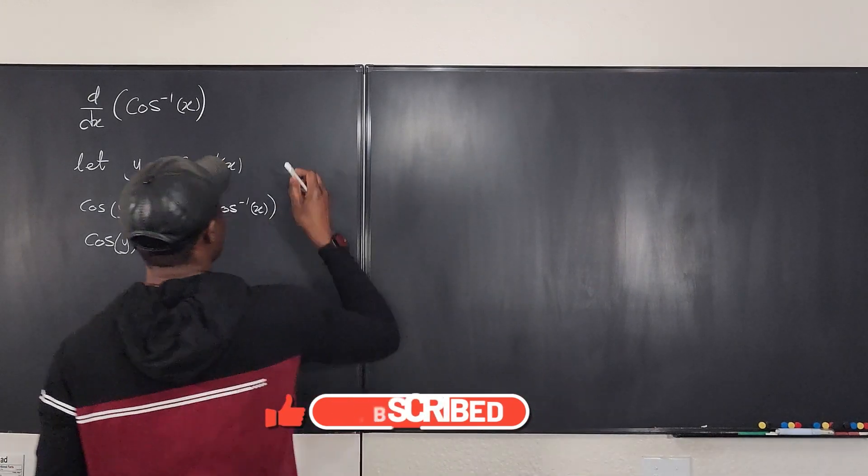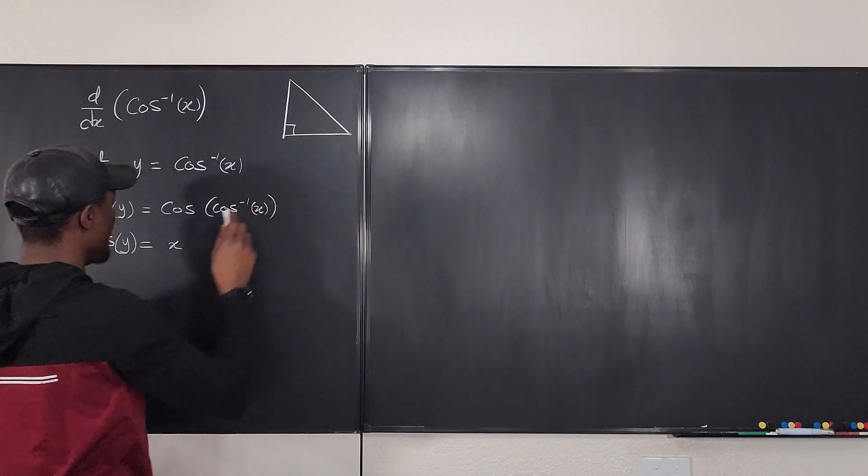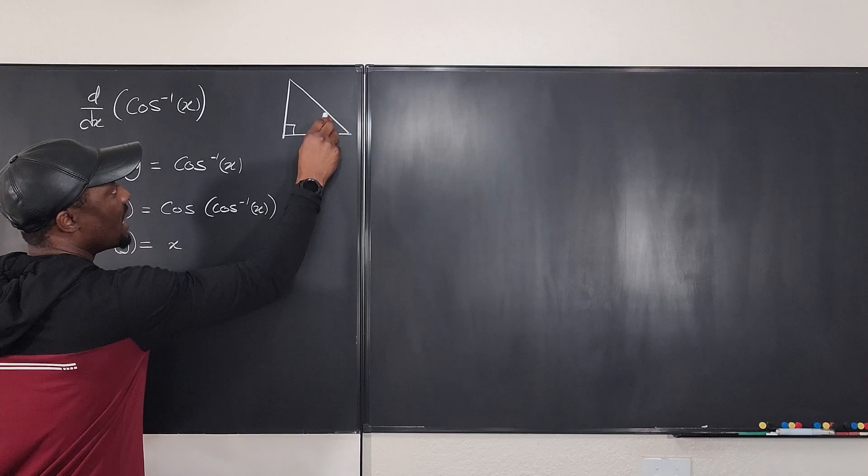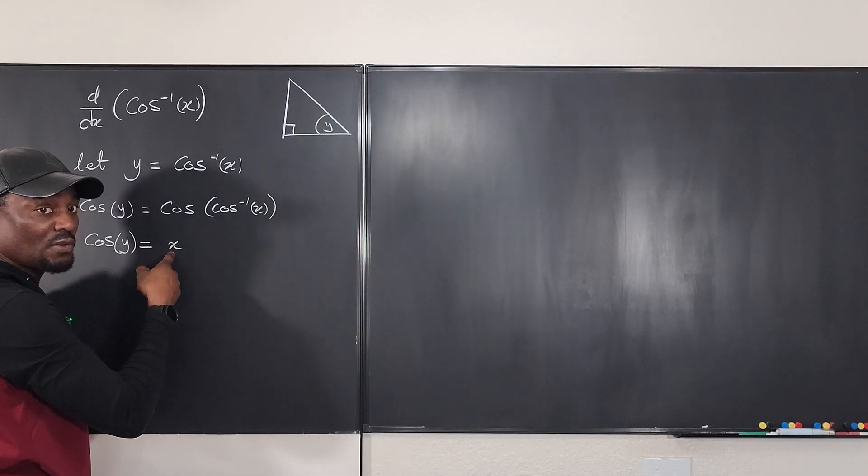So you're going to go here and say, I have a triangle, a right triangle, the angle is y. And I know the cosine of this angle is x. Well, by the way, this is x over one. So cosine is adjacent over hypotenuse.